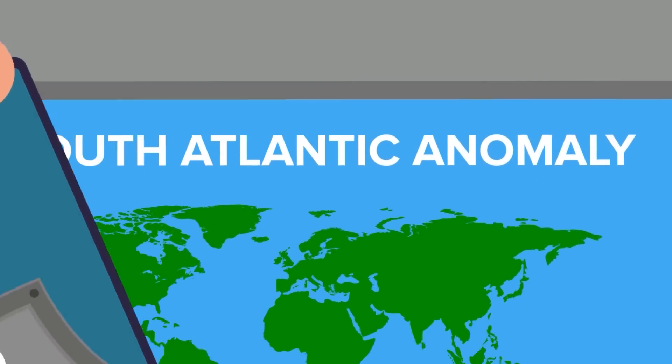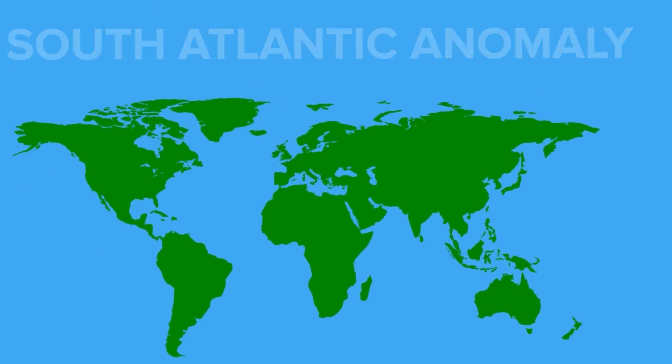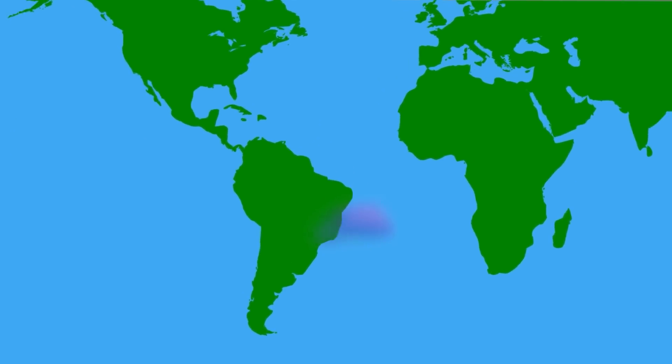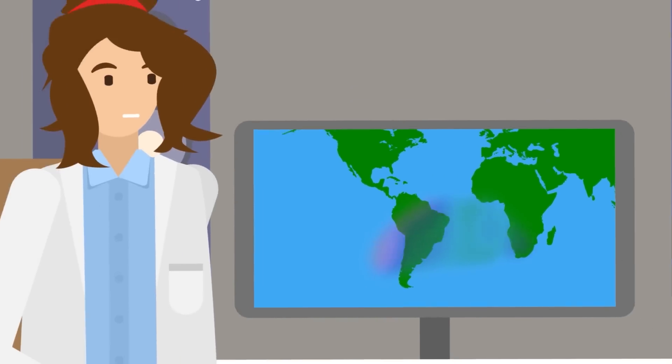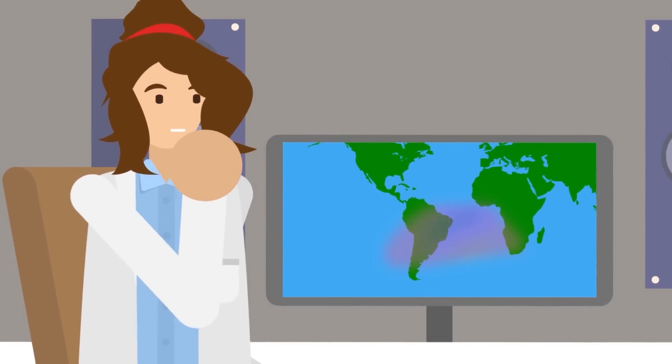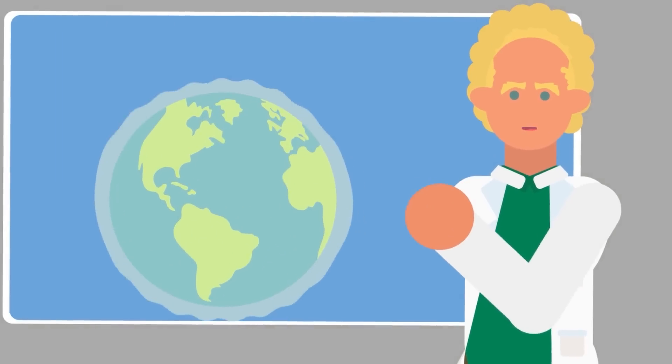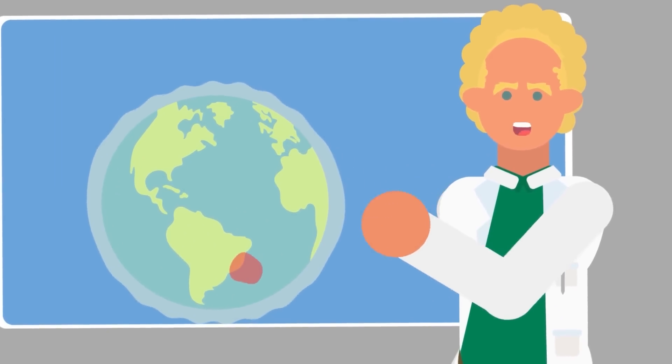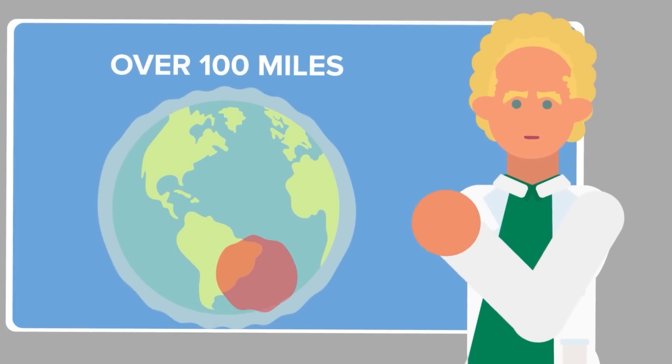Known as the South Atlantic Anomaly, it's an area of weakening magnetic field that grows on average by 12.4 miles per year. The area has been closely monitored since its discovery, and today this chink in the Earth's protective armor comes down to just over 100 miles over the surface of our planet.